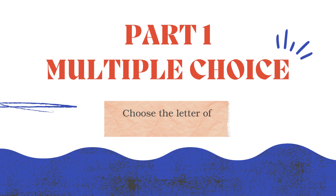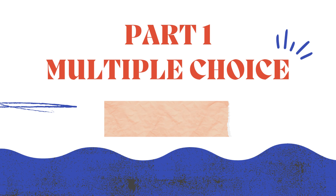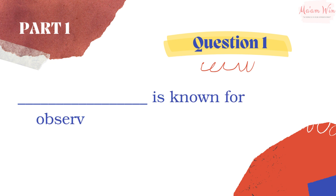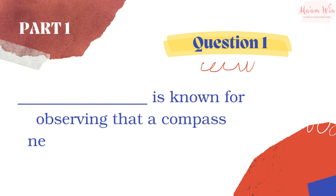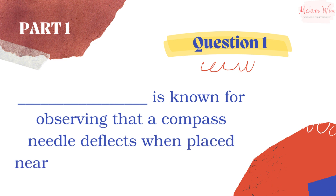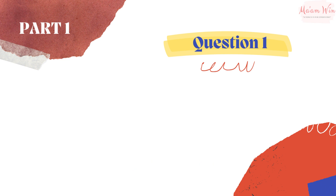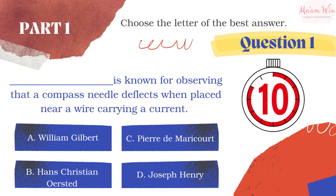Part one: multiple choice. Choose the letter of the best answer. Question number one: blank is known for observing that the compass needle deflects when placed near a wire carrying a current. Choose the letter of the best answer.